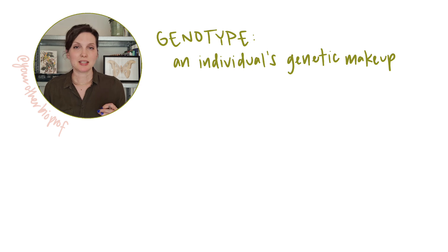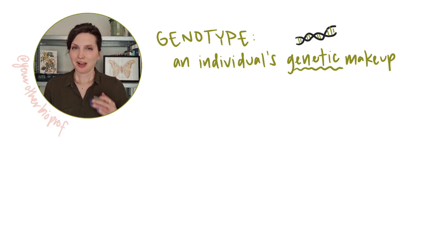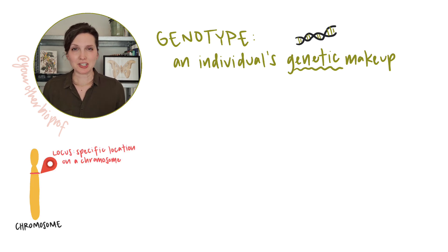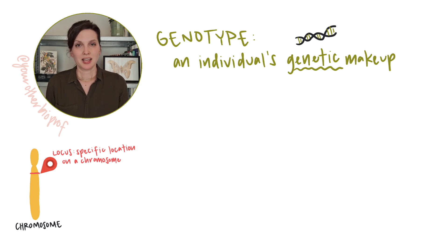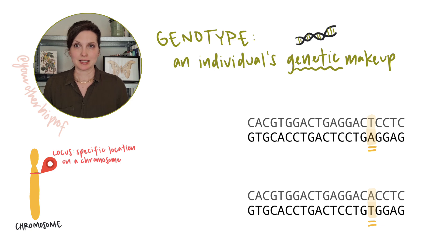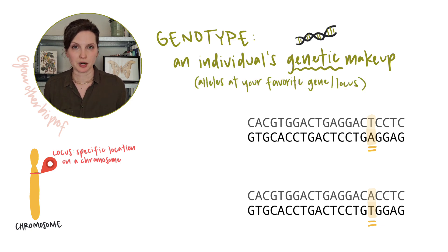The genotype is an individual's genetic makeup, its own unique sequence of A's, C's, G's, and T's. We often narrow that down though, and focus on the genotype for a specific gene or particular region — a location of DNA called a locus. Genes can exist in different versions, different DNA sequences, and we call those alleles. So you can also think about genotypes as the alleles that an individual carries.